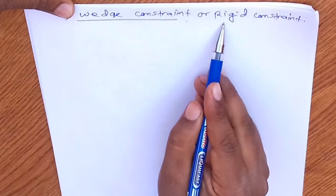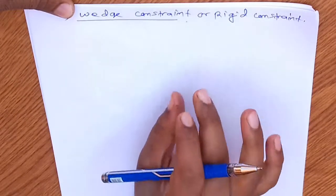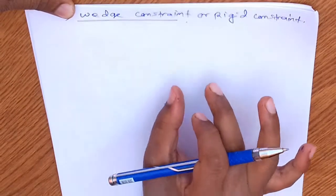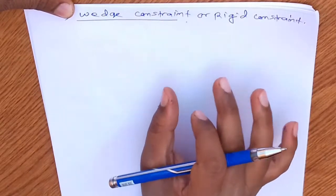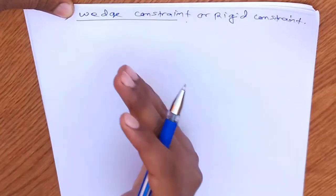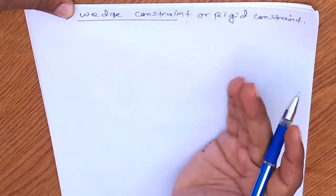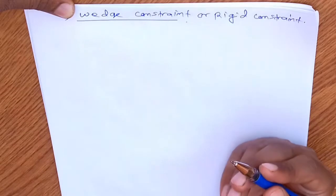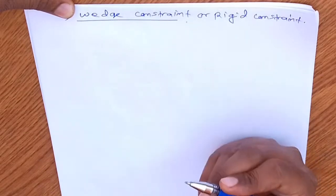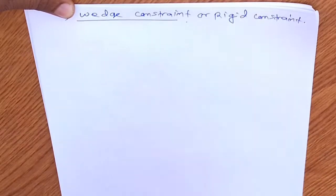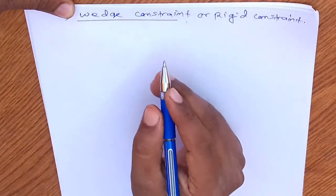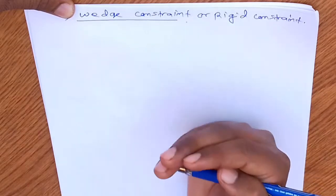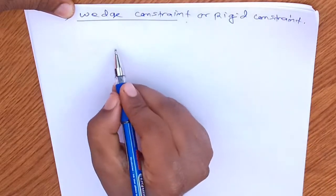This is a rigid system. There is a small difference between the string constraint, which we studied earlier, and this rigid constraint. The string constraint is related with strings, whereas this rigid constraint is related with two rigid bodies that are in contact.